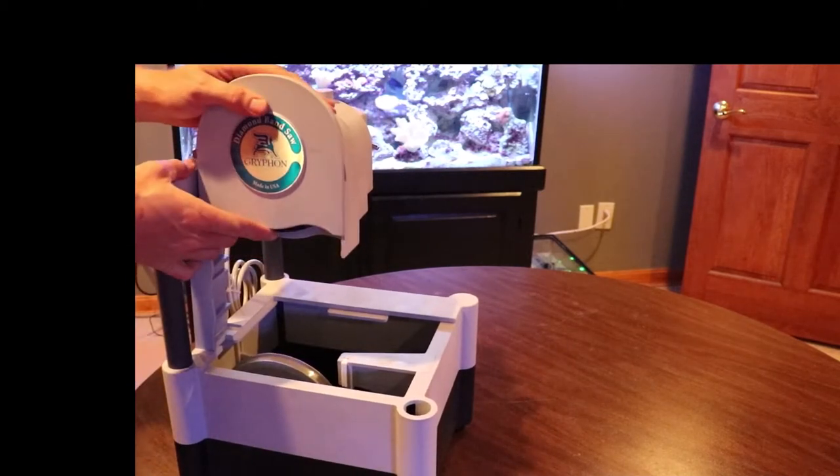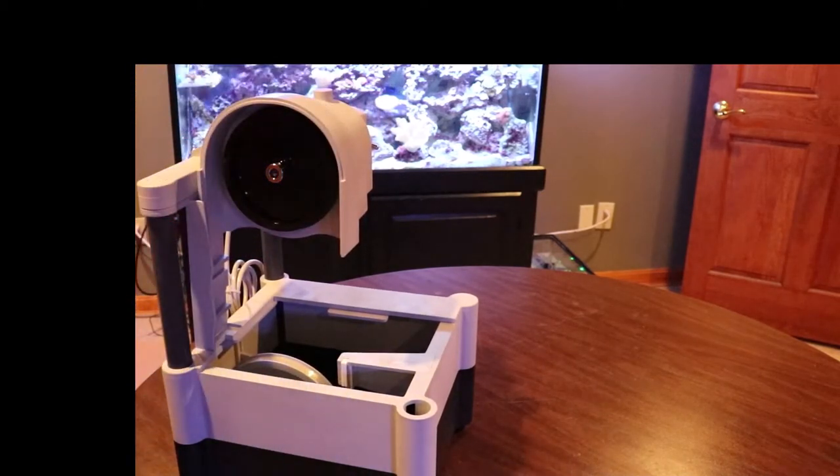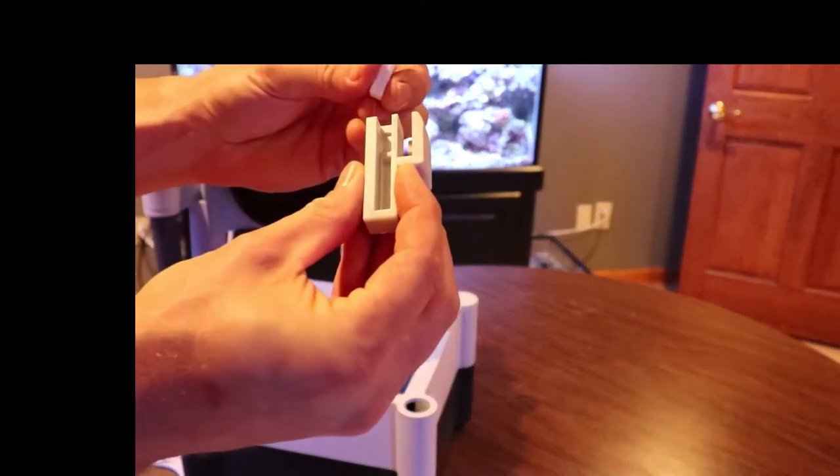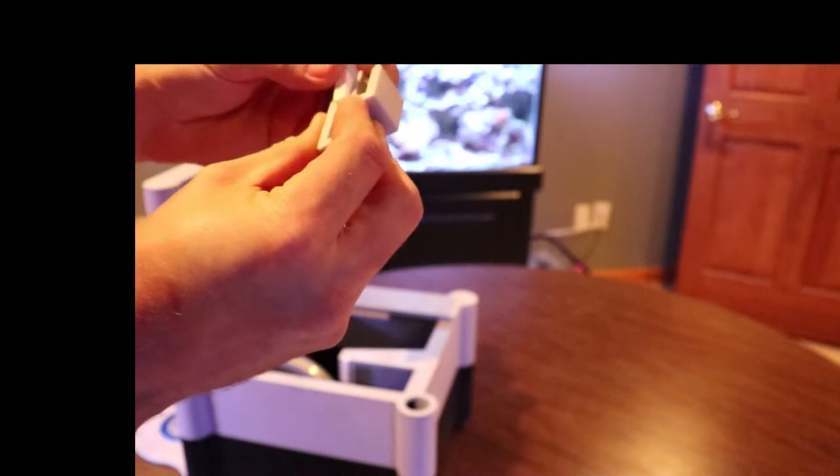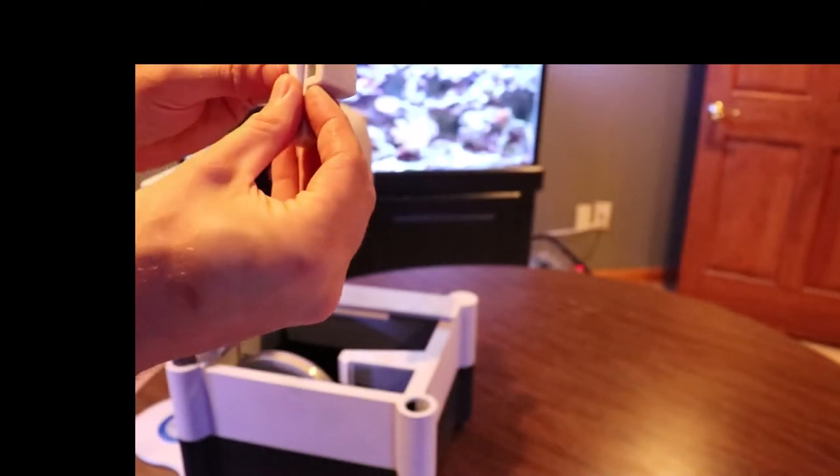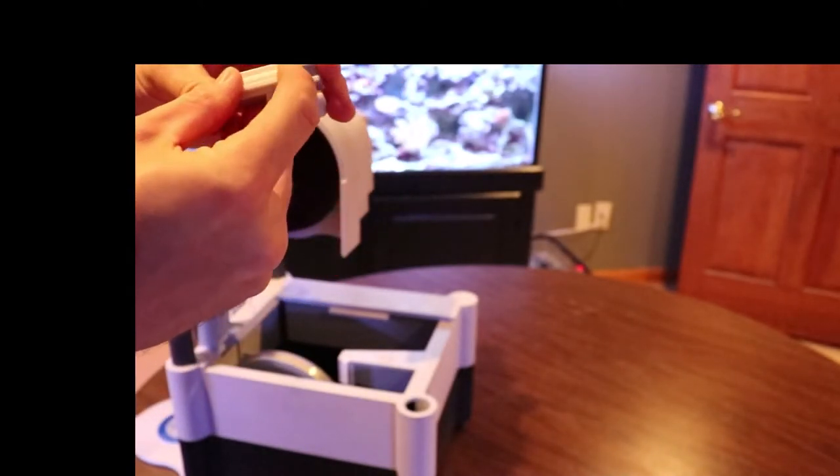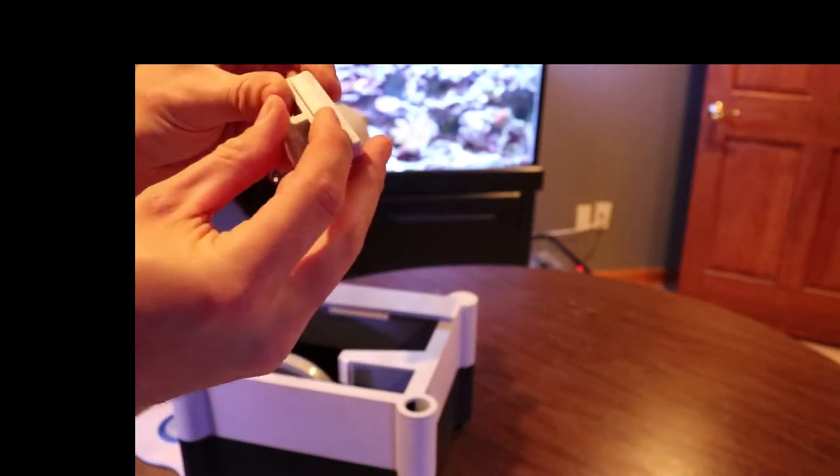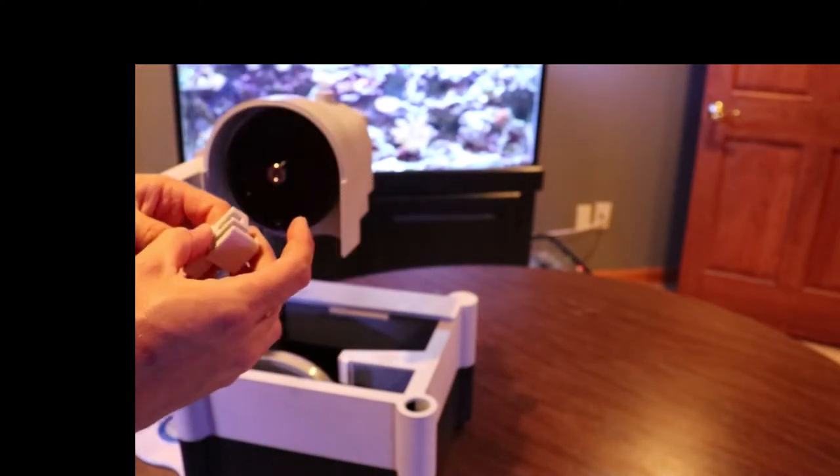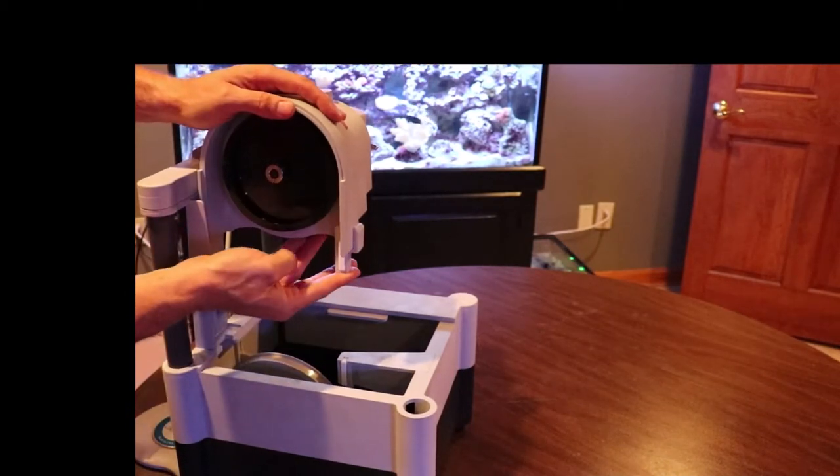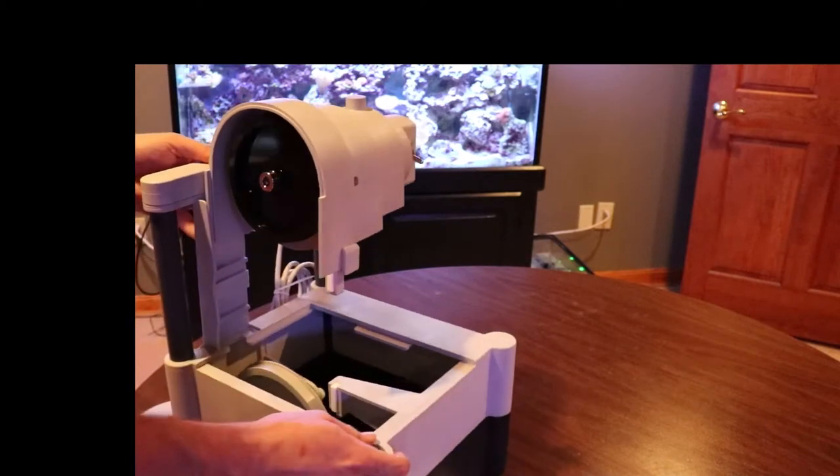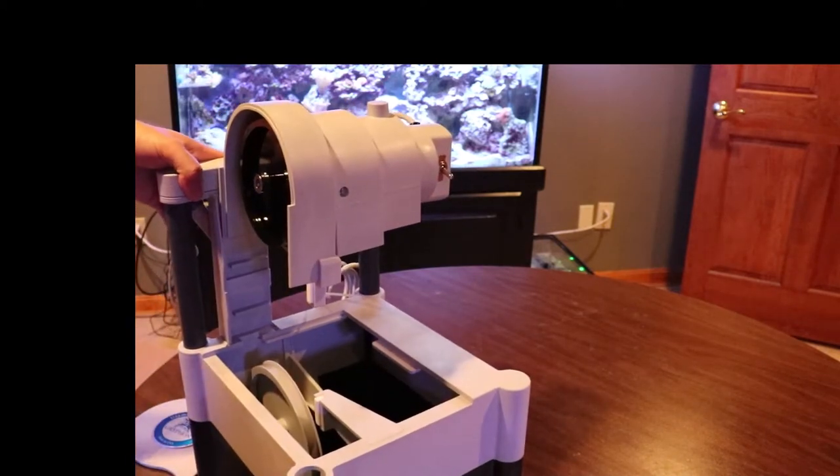So pop the motor cover off. Now here's your upper blade guide. Make sure the groove is facing out and you just slide it into the holder. It'll kind of snap into place. Here's the instructions that came with the saw. I had a hard time trying to figure out where this thing went. But there you go. It took me about 10 minutes to figure out where that thing went.